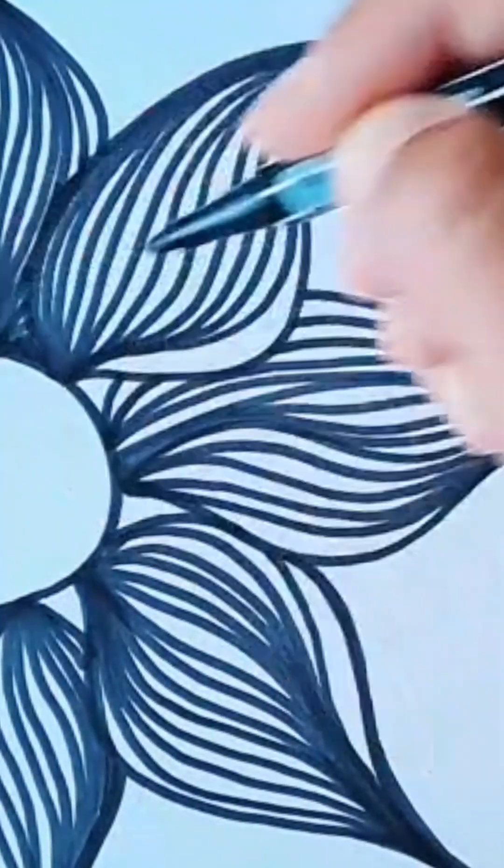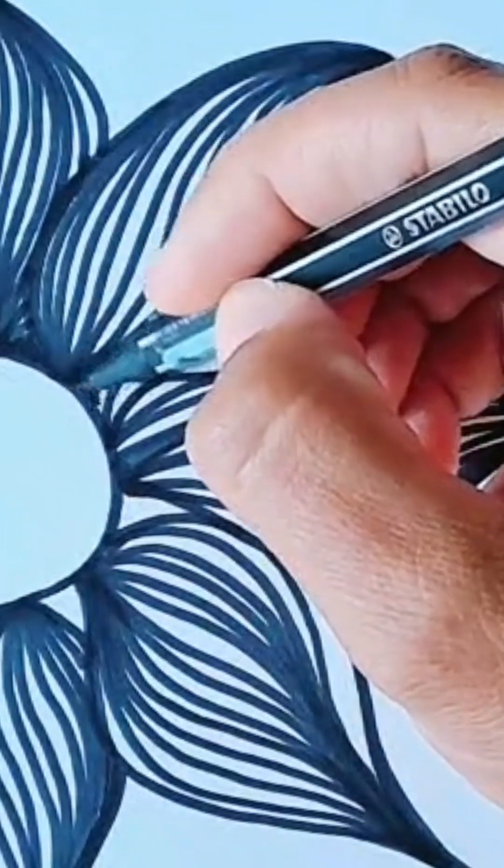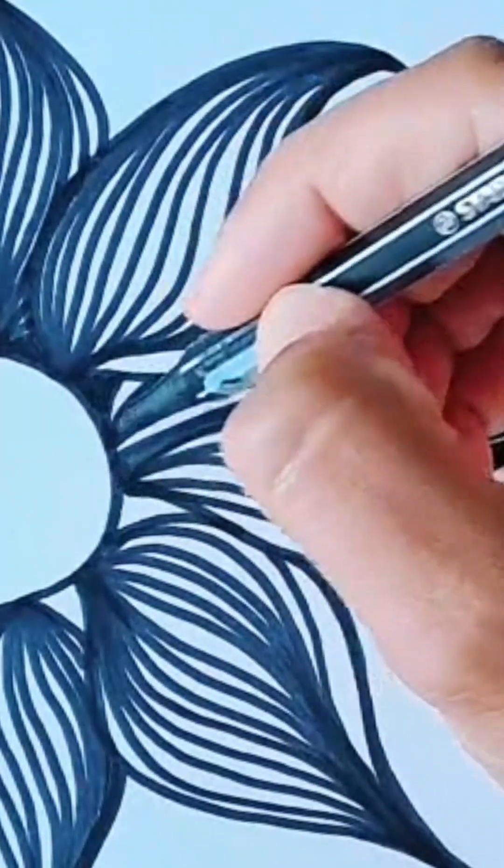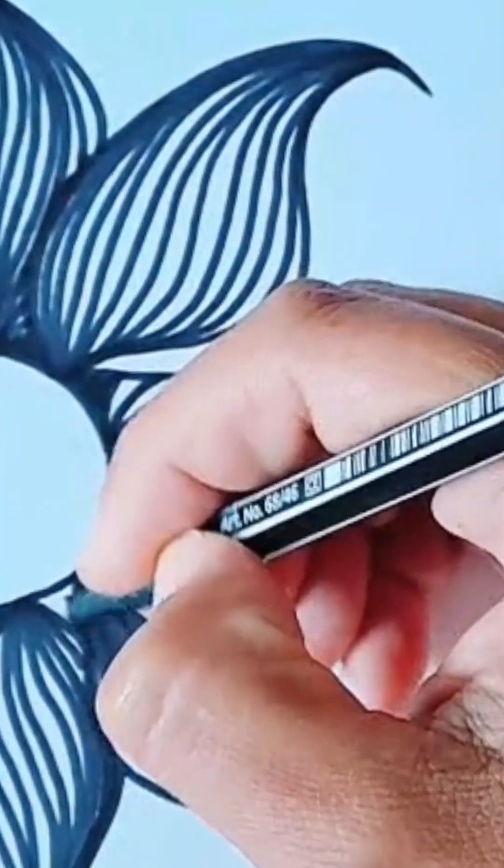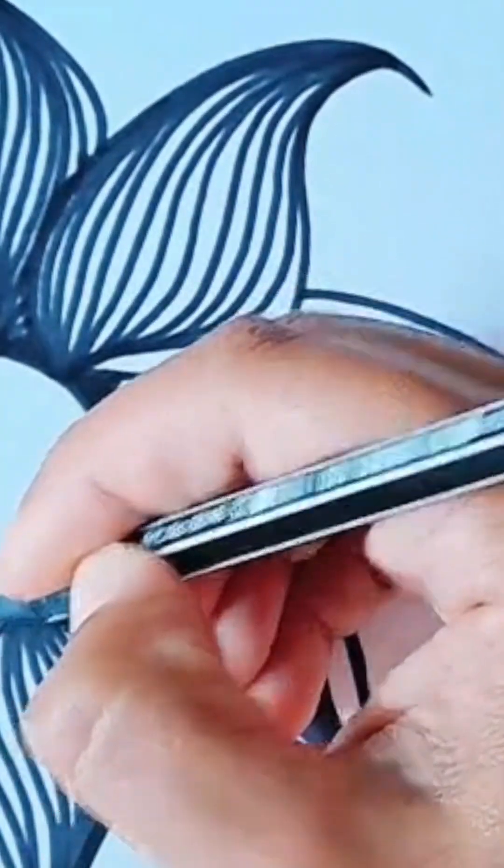If you'd like to thicken up some of those petals as well like what I've just done there, you just add a few extra lines and color in that little background there. It does give it a nice effect I think when it's darker towards the center.